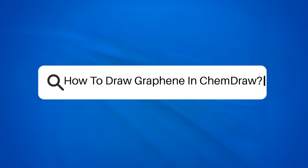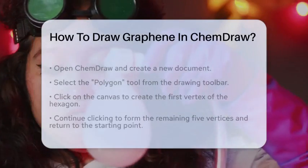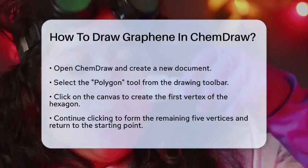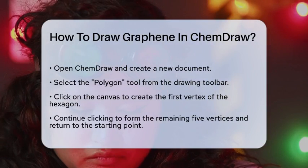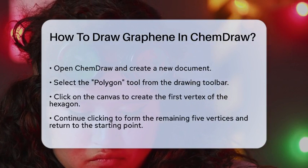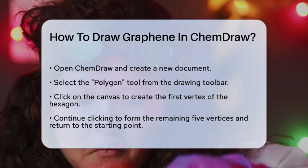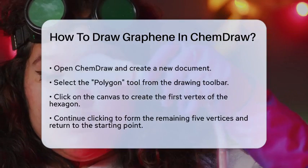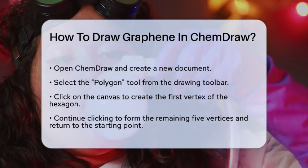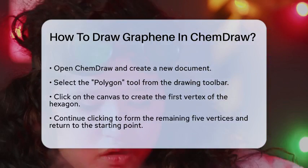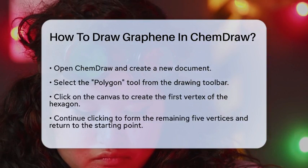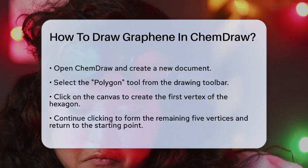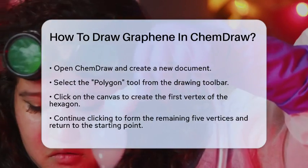How to draw graphene in ChemDraw. Imagine being able to visualize one of the most fascinating materials in modern science right on your screen. Graphene, a single layer of carbon atoms arranged in a two-dimensional honeycomb lattice, has captured the attention of researchers and engineers alike. Today, we will guide you through the process of drawing this remarkable structure using ChemDraw, a popular chemical drawing software.